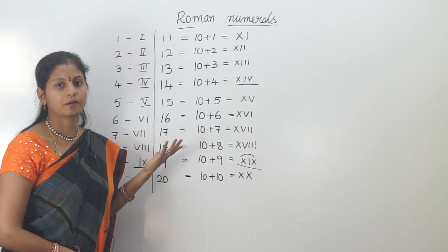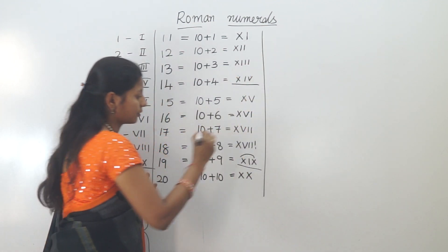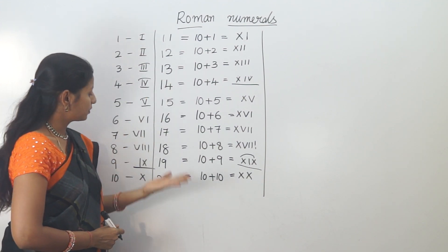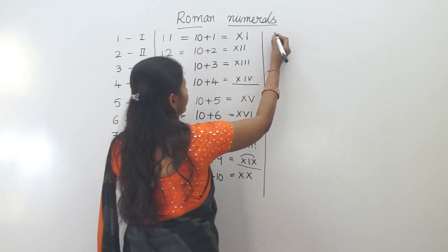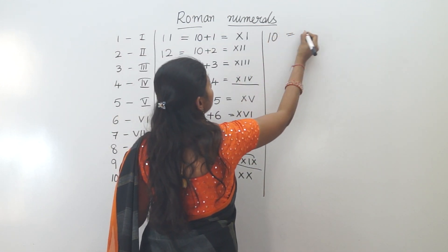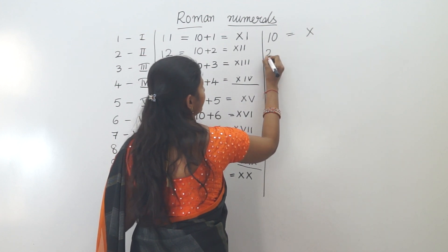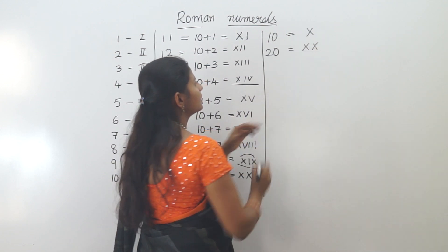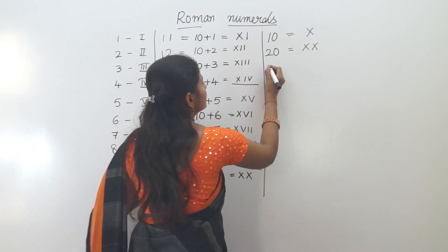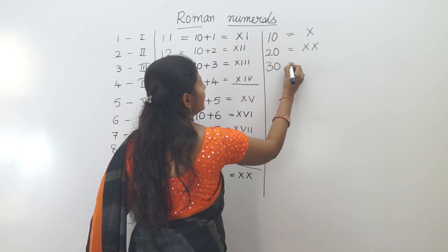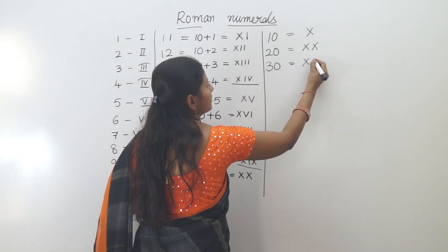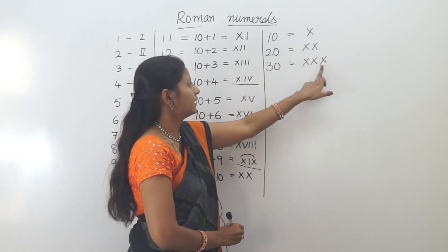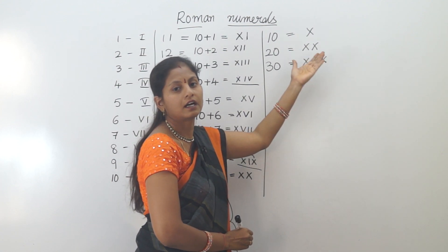Let's review the main symbols in Roman numbers — there are 7 symbols. For numbers 1 to 20: 10 is represented by X. For 30, we have 10 plus 10 plus 10, so three X's — XXX equals 30.